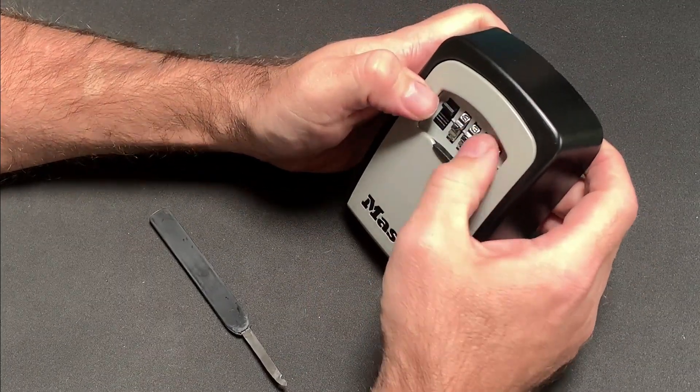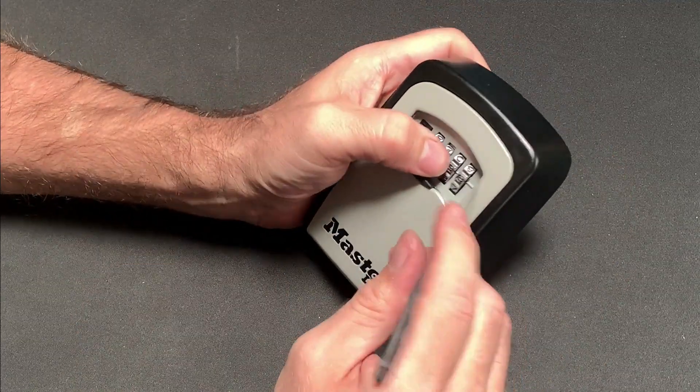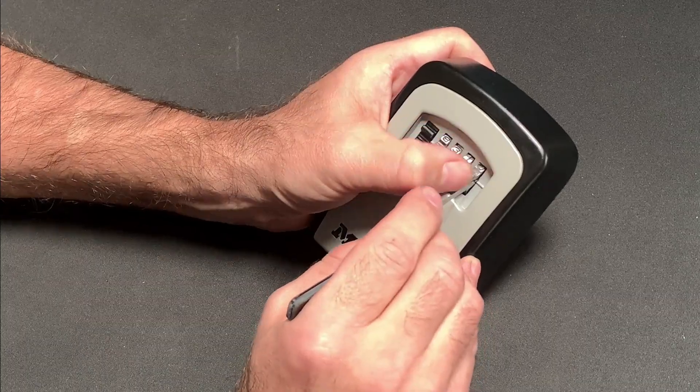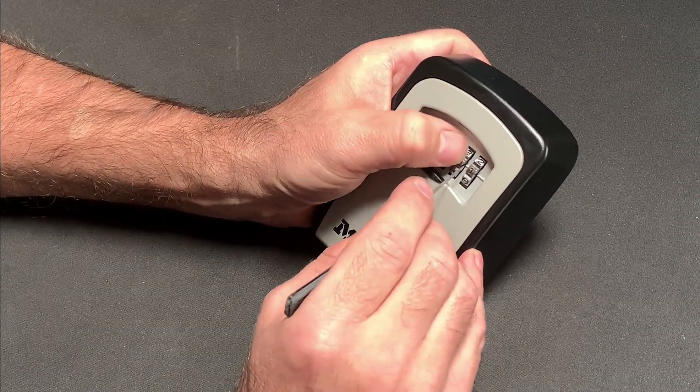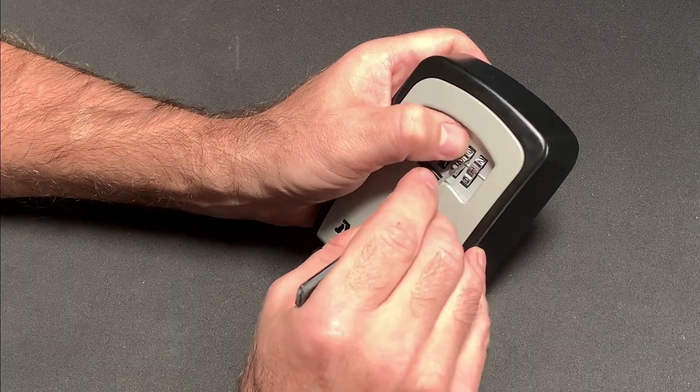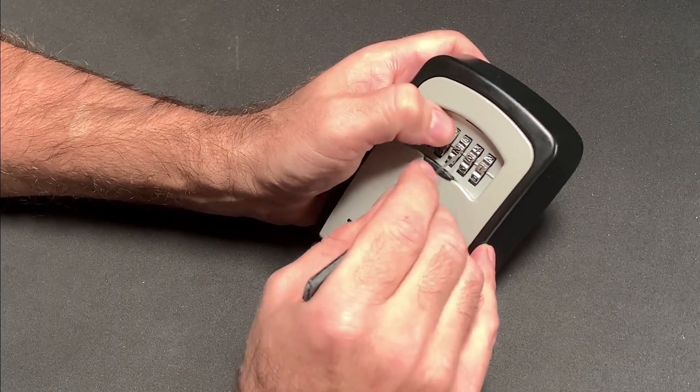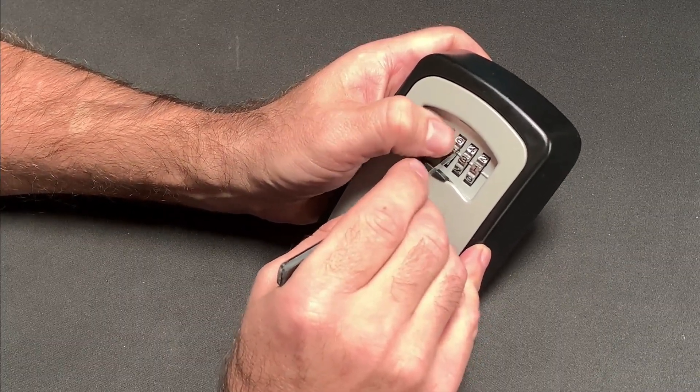To that end I inserted the decoder to the right of each wheel and then rotated the dials one position at a time while feeling for a bump or an indentation which might indicate that I'd found a true gate. This particular model has a small protrusion as the telltale sign and once I'd found this feature on each of the four dials and lined them up I secured the open in relatively short order.